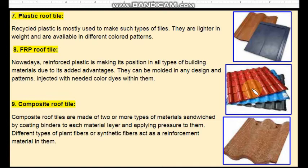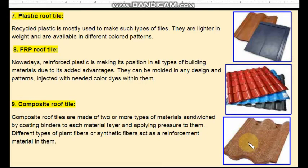They look far better and have a royal look when compared to different types of tiles. Ninth one is composite roof tiles. These are made of two or more materials sandwiched by applying pressure over them. Different types of plant fibres or synthetic fibres are used as reinforcement material while manufacturing such types of roof tiles.